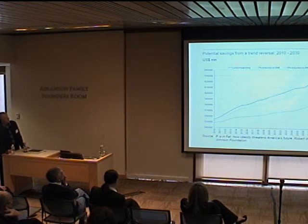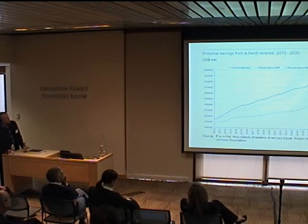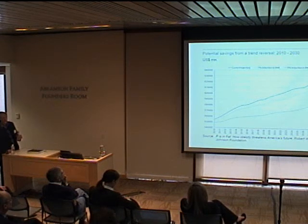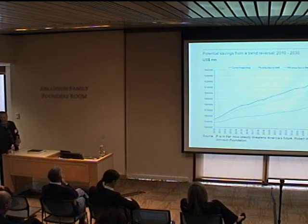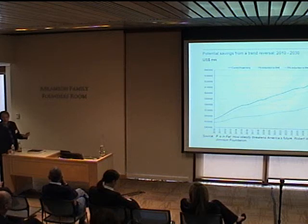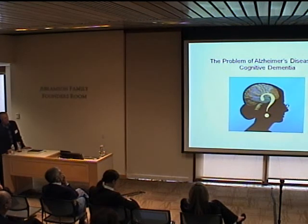Looking at estimated costs of obesity projected out to 2030: if nothing happens, the top line shows the trajectory. If we can get a 5% reduction in BMI — that's a measure of obesity — you'll see we dramatically reduce the cost. The middle line is a 1% reduction. There are economic costs associated with disease, not just individual health costs.